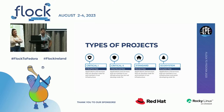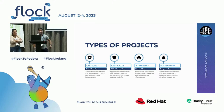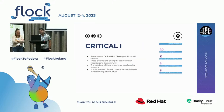We divide projects into categories to understand their importance. Critical class one: applications and services we develop code for and maintain in our infrastructure — really critical for Fedora Linux to be built and distributed. Critical class two: ones we don't write code for but deploy and maintain, wanting maximum uptime. Standard: code we develop and maintain but less critical. Ecosystem: enhance quality of life for contributors but lower priority.